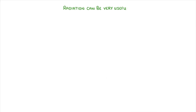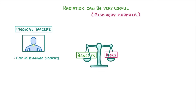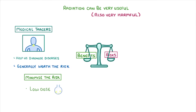So, as we've seen with radiotherapy and medical tracers, radiation can be very useful, but it is also very harmful. So whenever we use radiation, we have to weigh up the risks against the benefits. For example, using medical tracers can help us diagnose diseases, so it's generally well worth the risk if we're already suspicious that a person might have the disease. However, we still want to minimise the risk by giving a low dose with a short half-life.